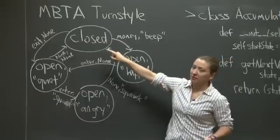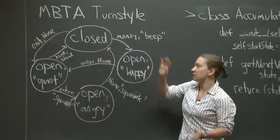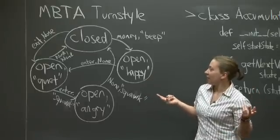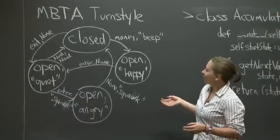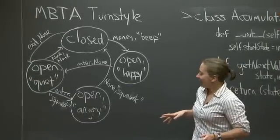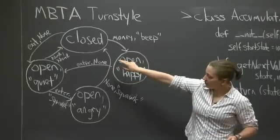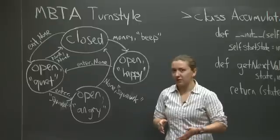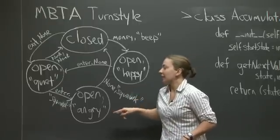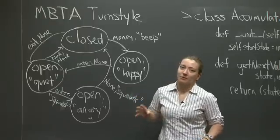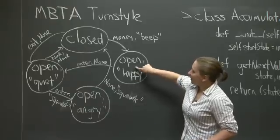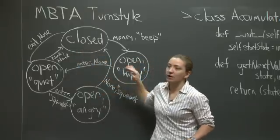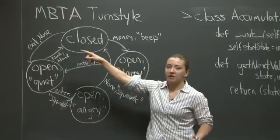One of them is that this turnstile could be closed, and it's waiting for people to interact with it in some way. It could be open and what I'll anthropomorphize the turnstile as being happy, as a consequence of you putting money in it. It could be open and quiet, as a consequence of usually some sort of other previous interaction with another person. Or it could be open and angry, as a consequence of people interacting with it when they should not.